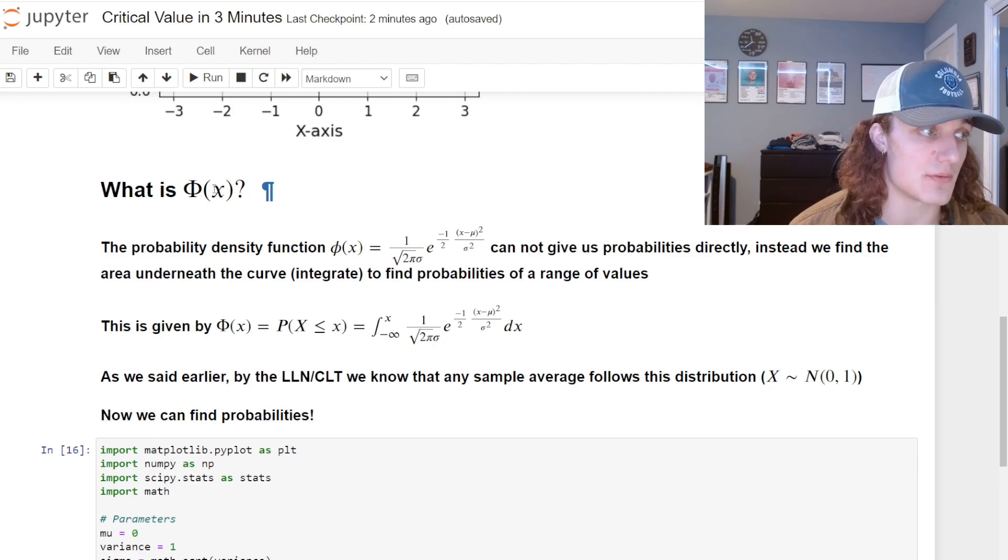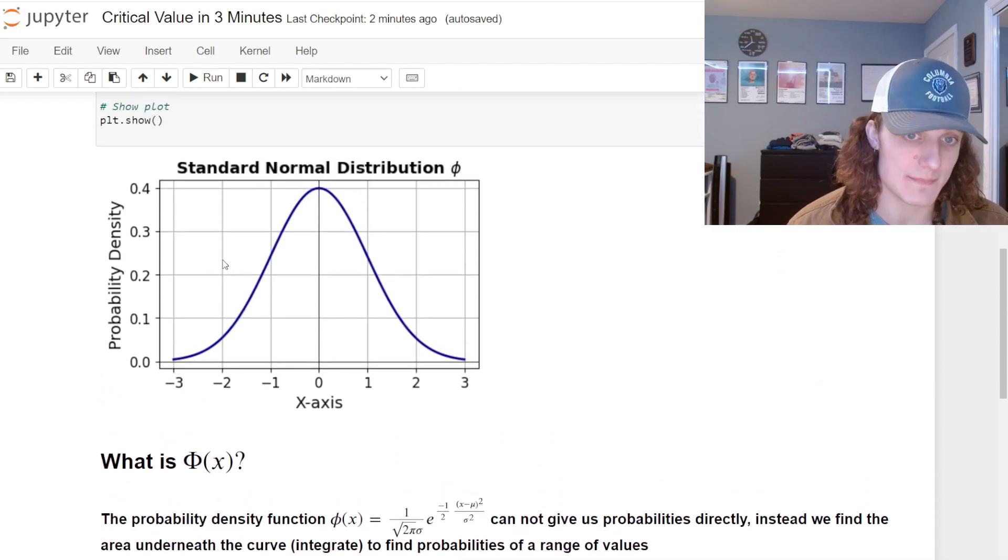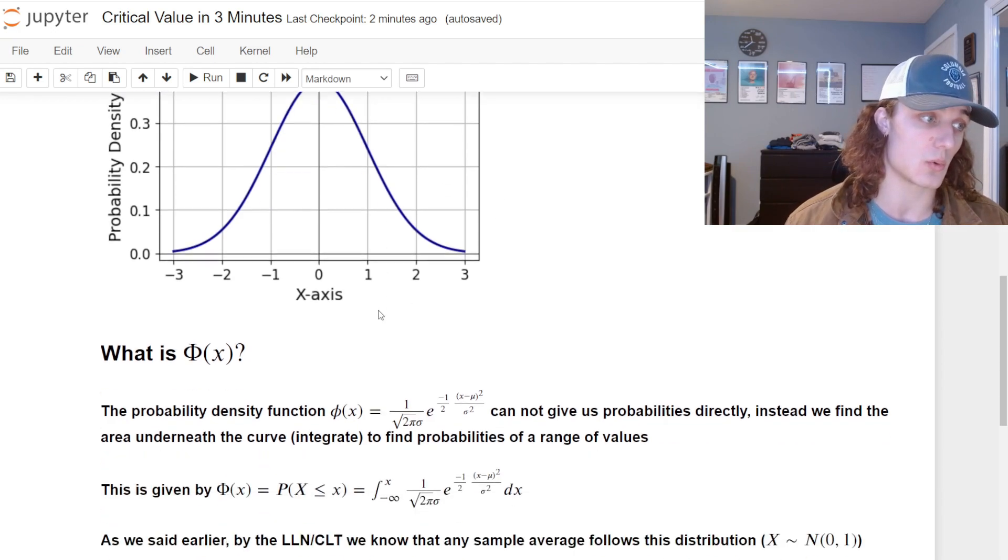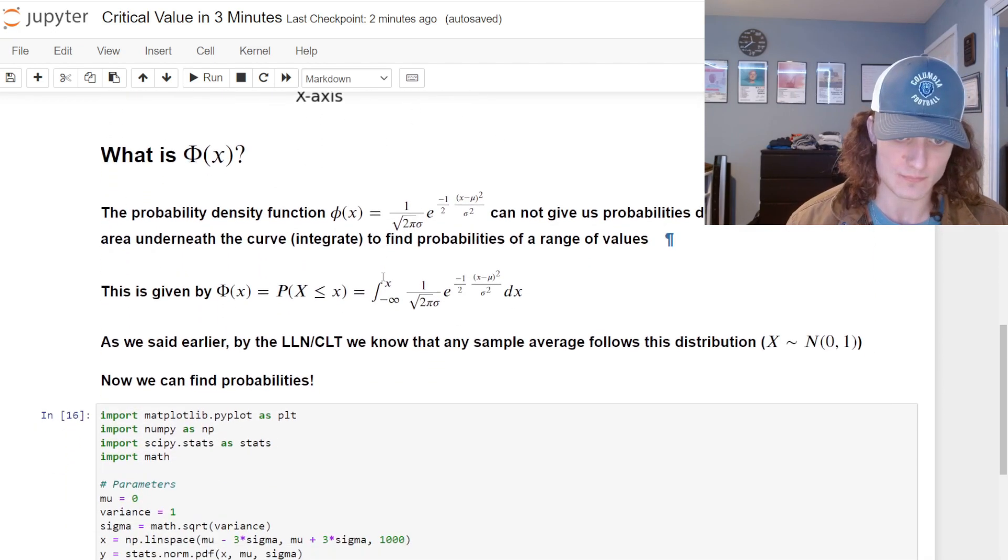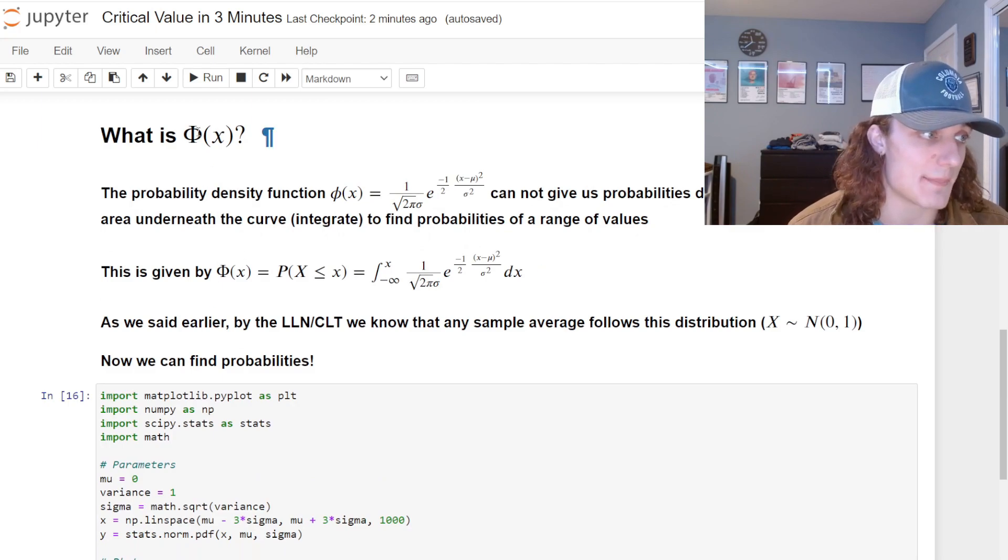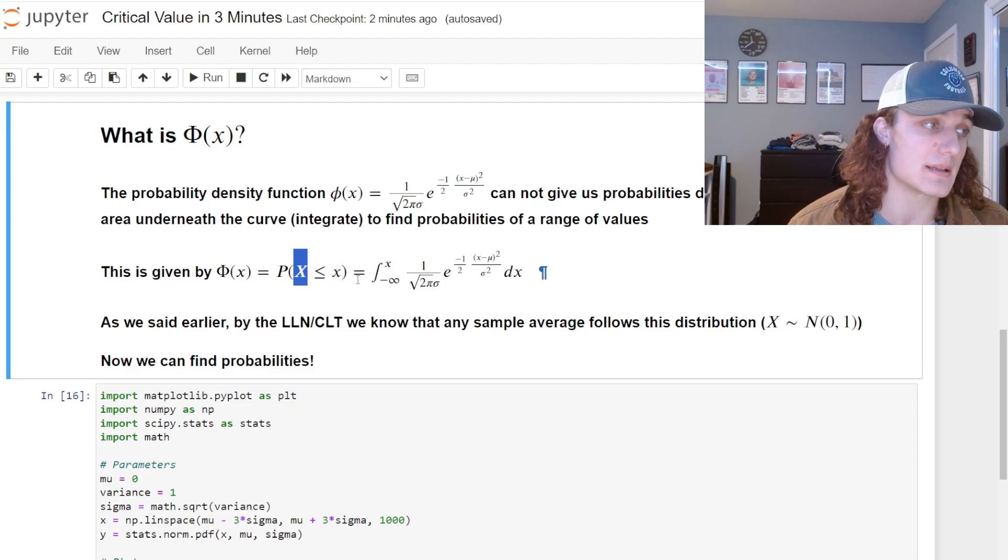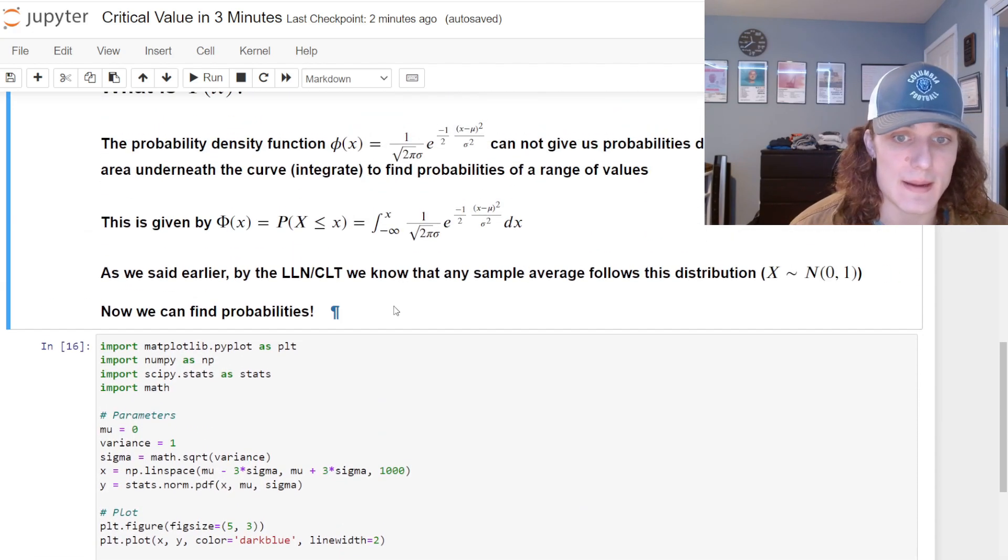What about capital Φ (Phi)? Well, capital Φ is integrating this curve, so finding the area, and that is going to give us a corresponding probability. The formal definition of capital Φ is: if we have some random variable capital X, the probability that it's less than or equal to little x is given by this integral of that PDF we had defined earlier. We know that any random variable sample average is going to follow this distribution, so we can integrate and find a corresponding probability.